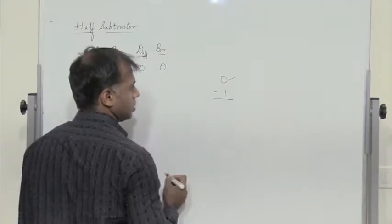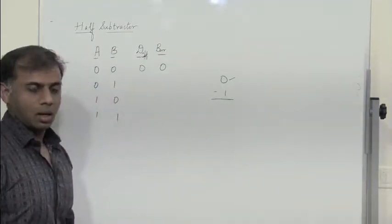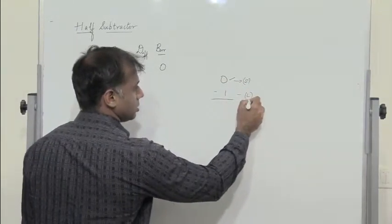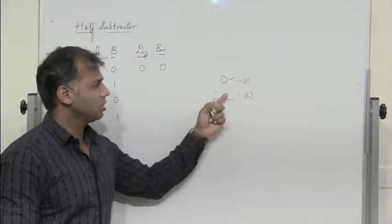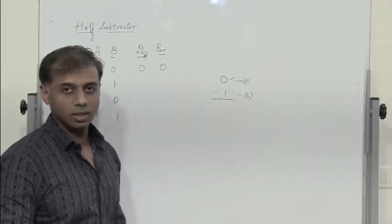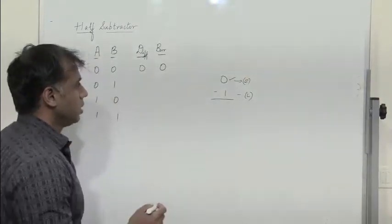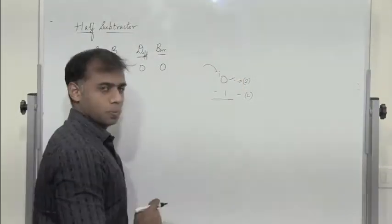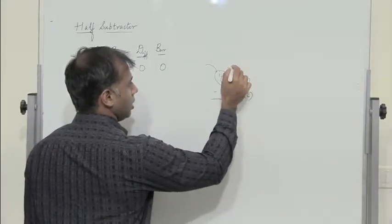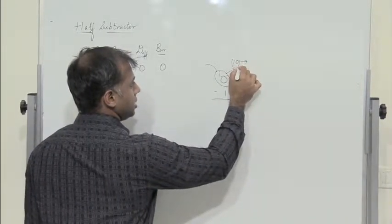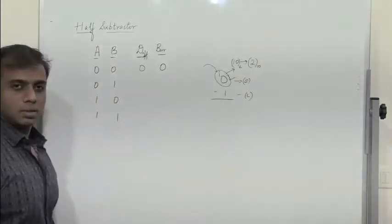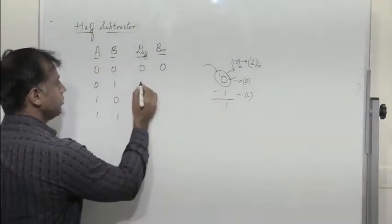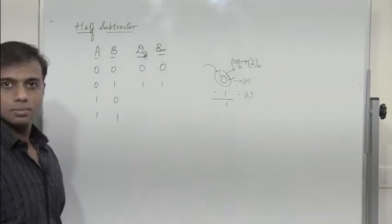So 0 minus 1 — here 0 is a smaller number and 1 is the larger number. We basically cannot subtract 0 minus 1, so we would get minus 1. But we don't want a negative number, so what we do is we borrow 1. When we borrow 1, it becomes 1-0. 1-0 in binary is equivalent to 2 in decimal. So this is 2 minus 1, which gives us 1 as the difference. So difference is 1, borrow is 1.